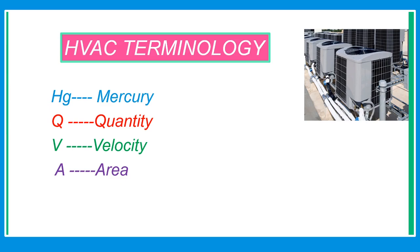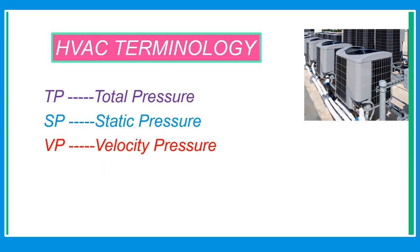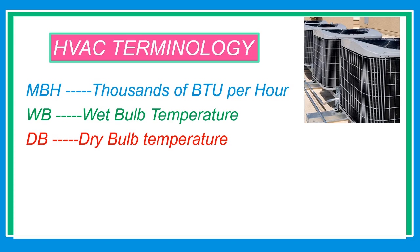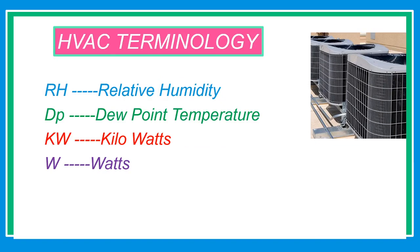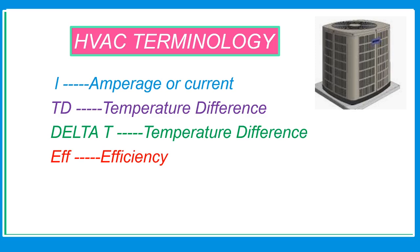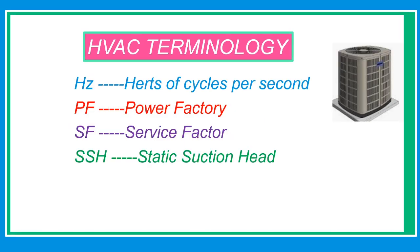Q quantity; V velocity; A area; TP total pressure; SP static pressure; VP velocity pressure; MBH thousands of BTU per hour; WB wet bulb temperature; DB dry bulb temperature; RH relative humidity; DP dew point temperature; KW kilowatts; W watts; I amperage or current; TD temperature difference; DT change in temperature or temperature difference; EFF efficiency; PF power factor; SF service factor; SSH static suction head. Thank you.